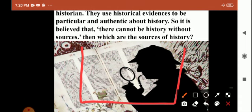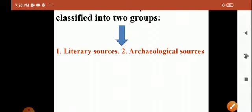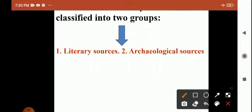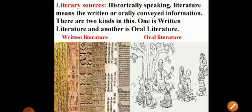The sources of history can be classified into two groups: literary sources and archaeological sources. Archaeology means the study of monuments, ancient structures, inscriptions, and coins. These two groups — literary sources and archaeological sources — form the basis of historical study.